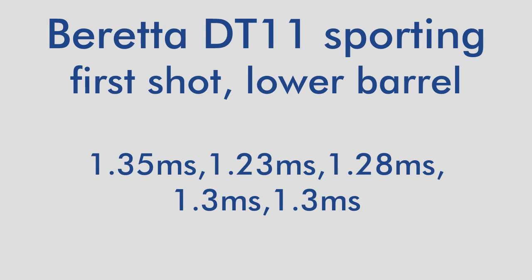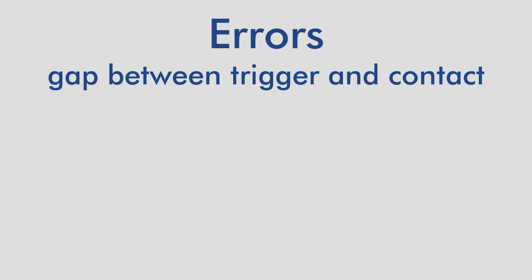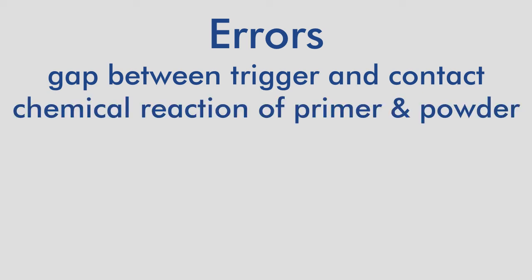After my little experiment, I thought about the errors that could have happened in the measurements. First of all, the major error with the gap between the trigger and the contact. This gap should be as narrow as possible to get good measurements. If you get the same results when you slowly pull the trigger or fast pull the trigger, then the gap should be as close as possible. The second is the chemical reaction of the primer, which is not of interest because it depends on your ammunition and not on your shotgun.